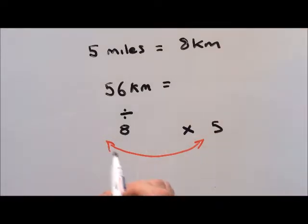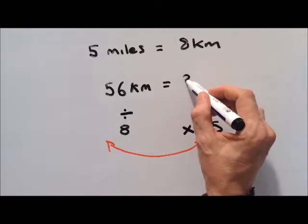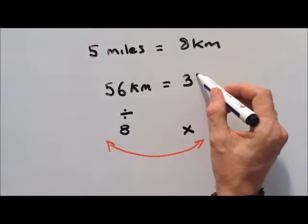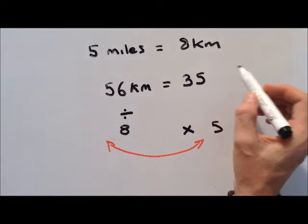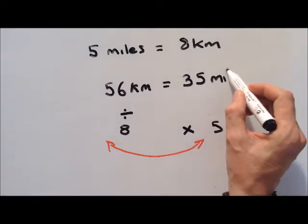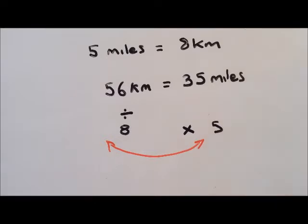So 7 times 5. Five times seven is 35. There we go.